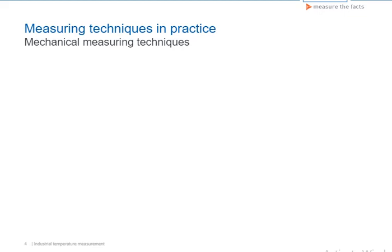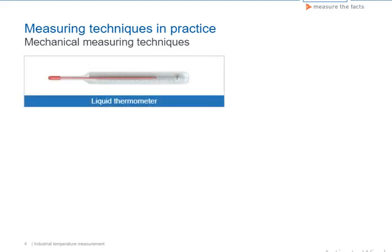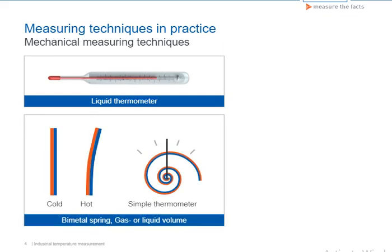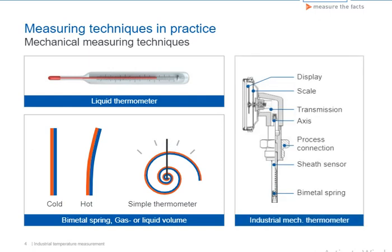Mechanical measuring techniques utilize the fact that substances expand as the temperature rises. The mercury in a classic mercury thermometer expands in a glass capillary along a scale. In a bimetal thermometer, two differently expanding metals are connected; as the temperature rises, one metal expands more than the other, resulting in a mechanical deformation visible with an indicator needle. Tension thermometers use the expansion of a gas or liquid reservoir and transmit the ensuing increase in pressure over a capillary to a mechanical display unit.